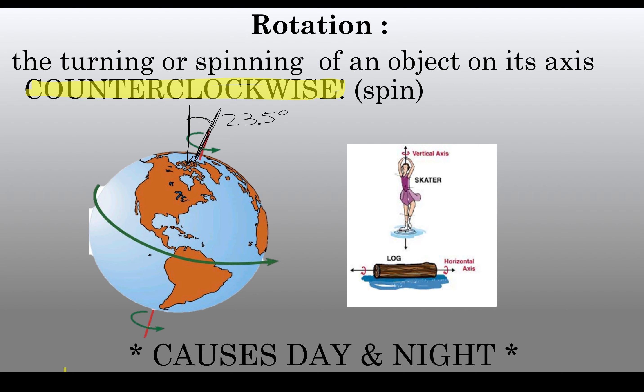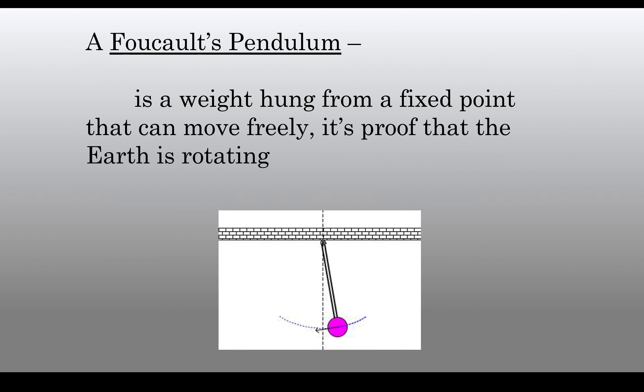That causes day and night. The sun is not moving. And one piece of evidence is Foucault's pendulum, which is a weight that's hung from a fixed point, and usually we would just see this weight swing back and forth.